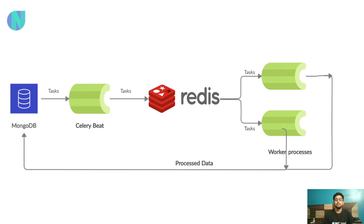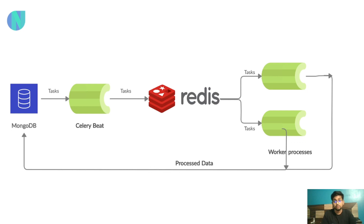Some things may work and some may not for periodic scheduling on certain OS platforms. Ubuntu and Mac are recommended since they are Linux-based and work easily. On Windows, some things like periodic tasks and cron jobs may have limitations, so we will mostly look at Ubuntu and Mac examples.